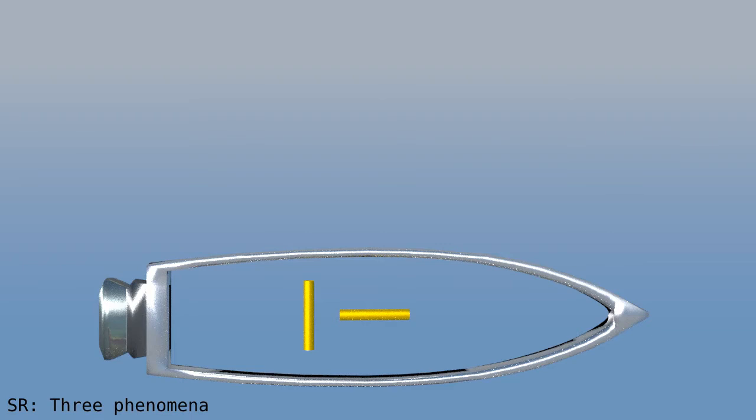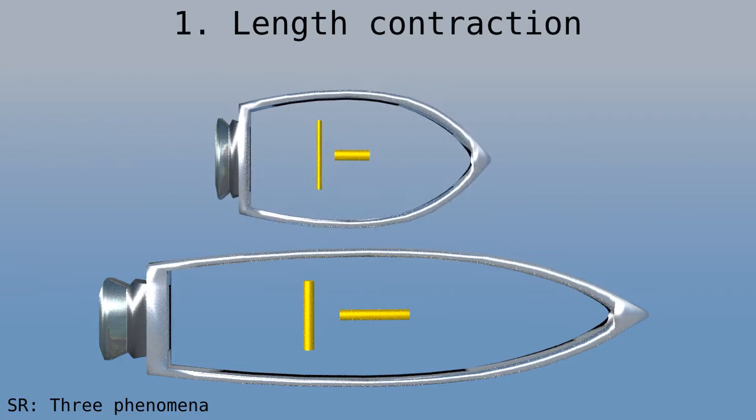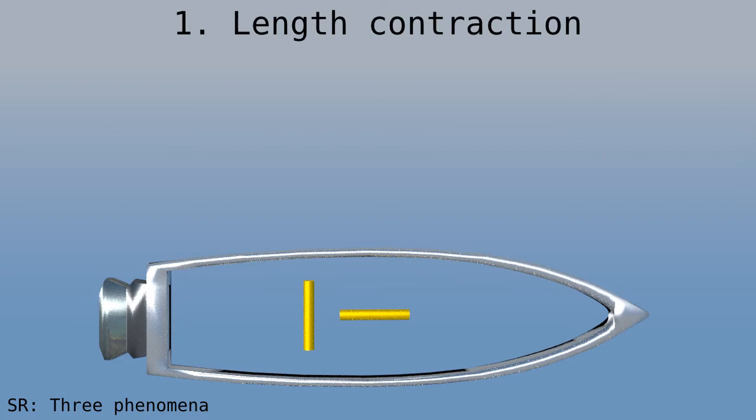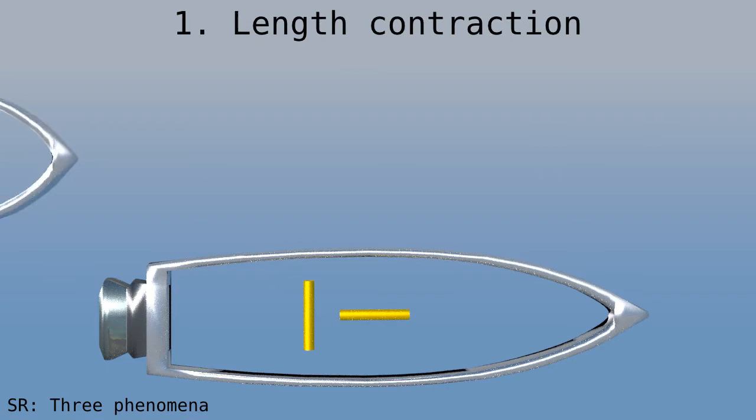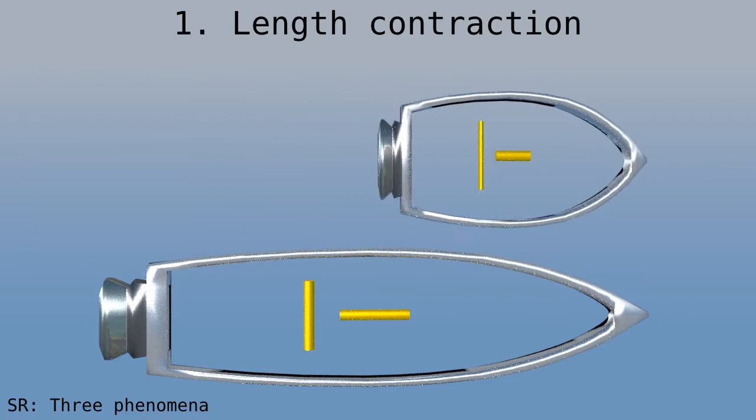Objects that move contract, but only in the direction of motion, not sideways. The moving spaceship is identical to the first one, but because it's moving, it's shorter. The same is true for the sticks inside. The horizontal one is half as long as at rest. The vertical one is as long as before, but skinnier. In this case, the spaceship moves at 87% of the speed of light. We chose this speed to get a factor of two in contraction.